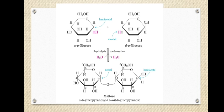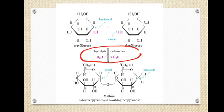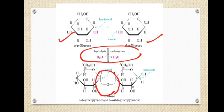A glycosidic linkage is a type of bond formed by the condensation of a molecule of water between two monosaccharide units. The opposite of this is called hydrolysis. Recall that monosaccharides are simple sugars that cannot be further broken down by hydrolysis.